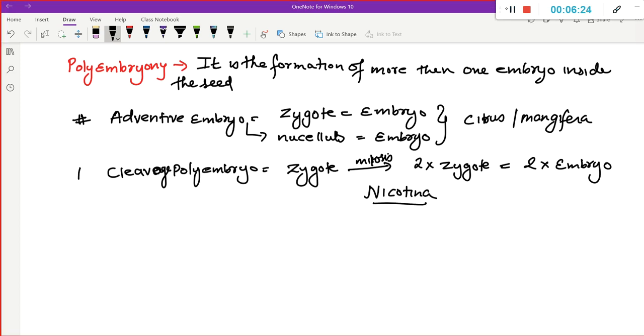The next thing which we will see here as an example here is different structures which can form embryo. For example, Synergid also form embryo. Obviously, the new embryo, one will be diploid, one will be haploid. This is seen in case of Sagittaria.